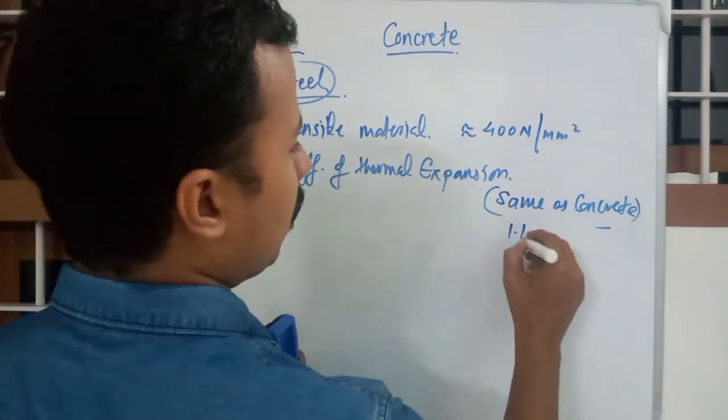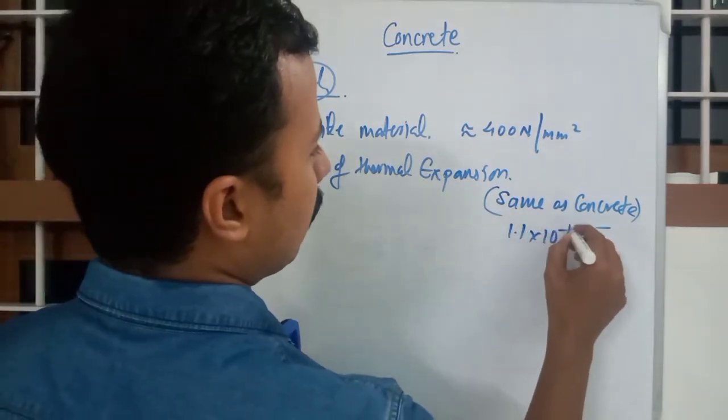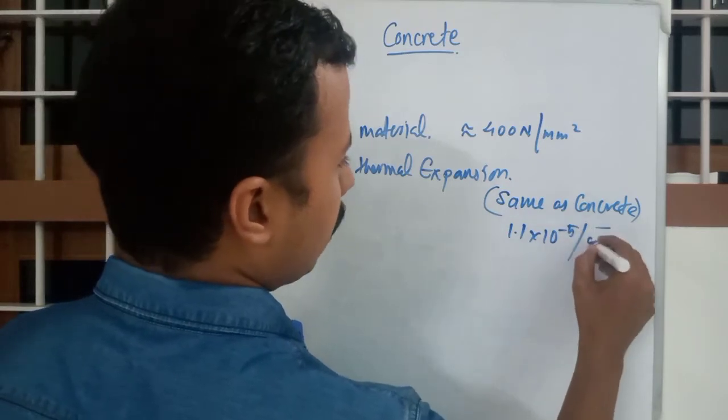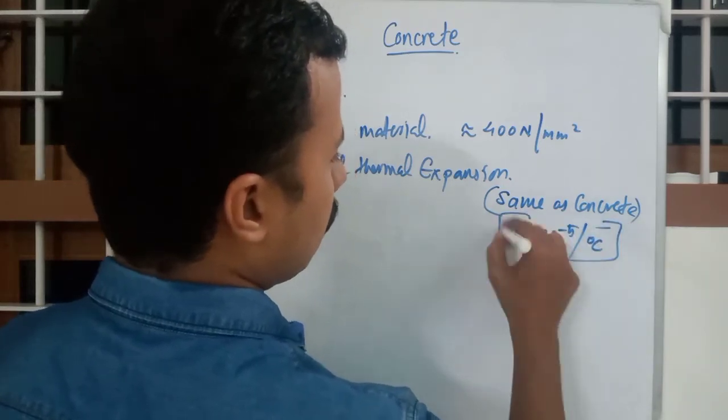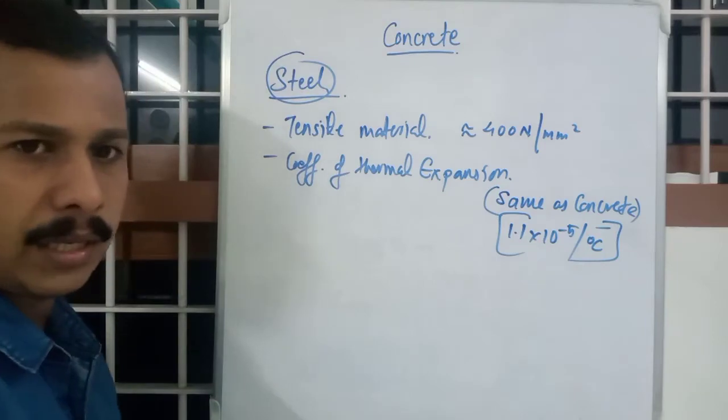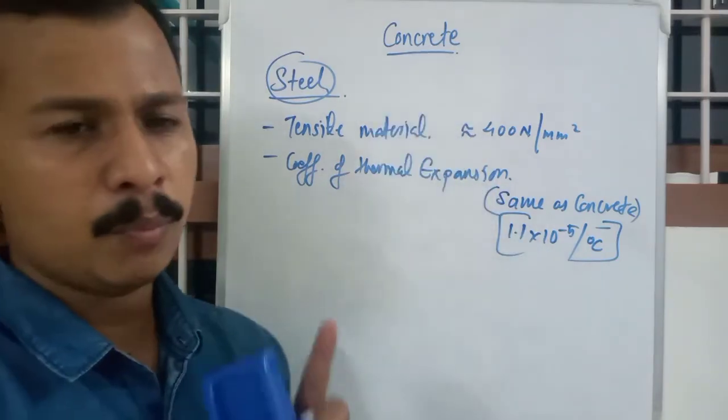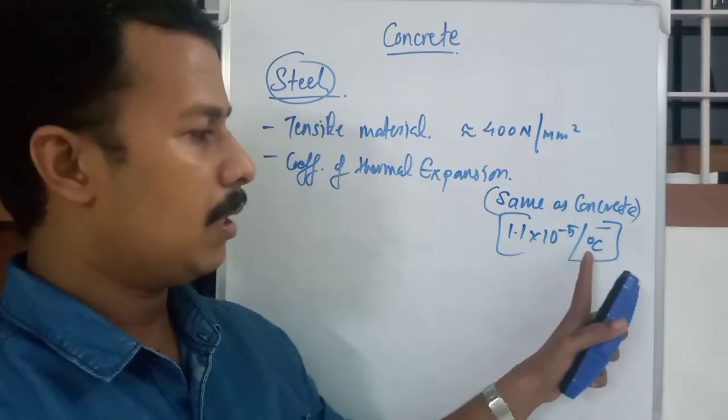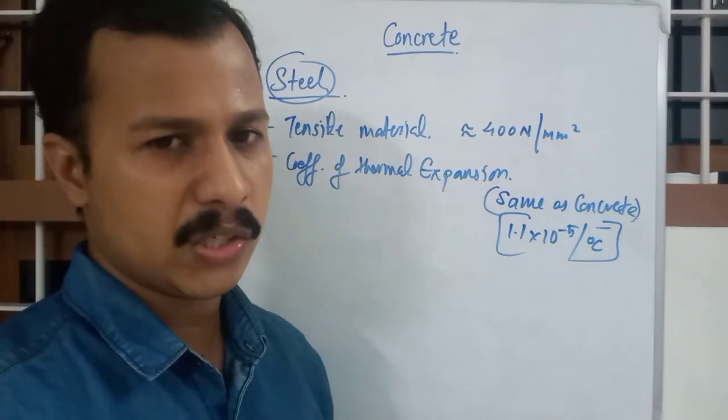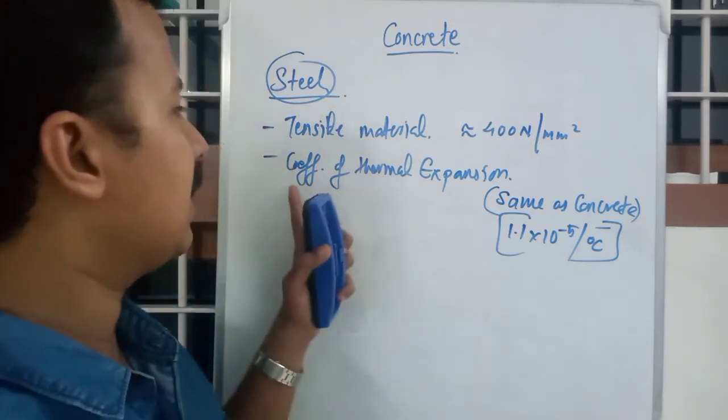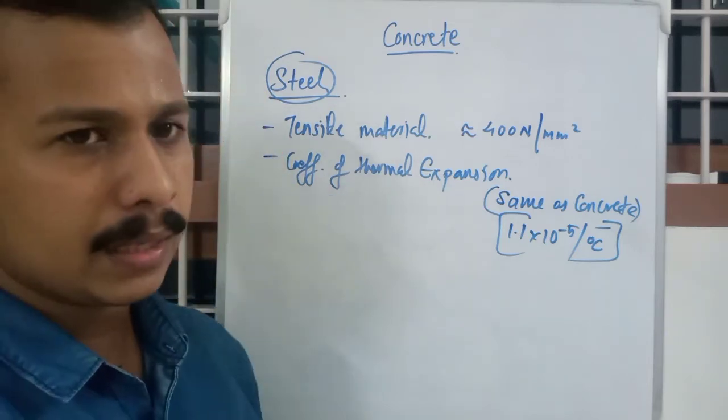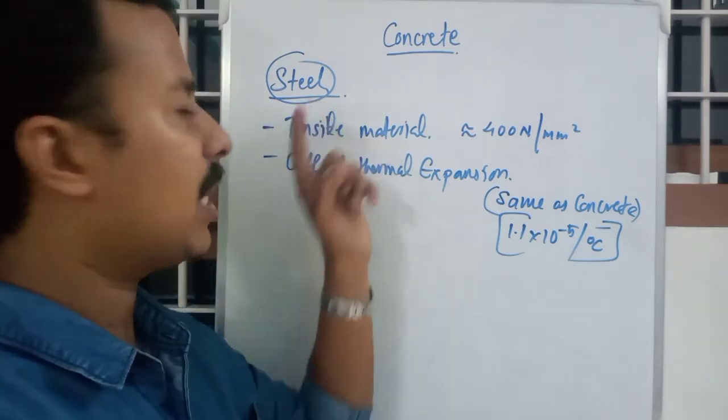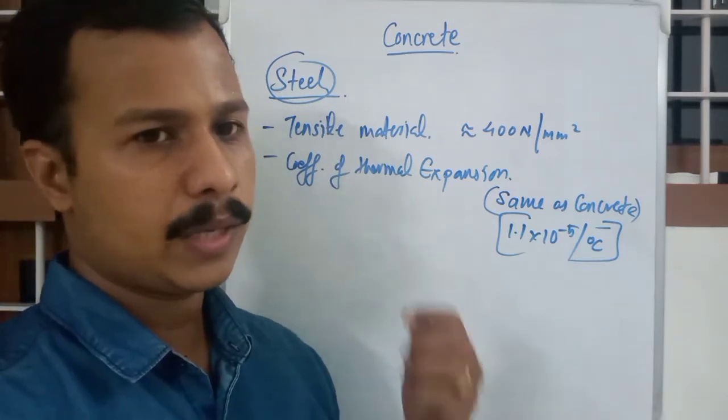And that is around 1.1 into 10 raised to minus 5 per degree Celsius. That of concrete is 1.2 into 10, around 1.2 into 10 raised to minus 5 per degree Celsius. So that is the main thing, main point that made steel the appropriate person.